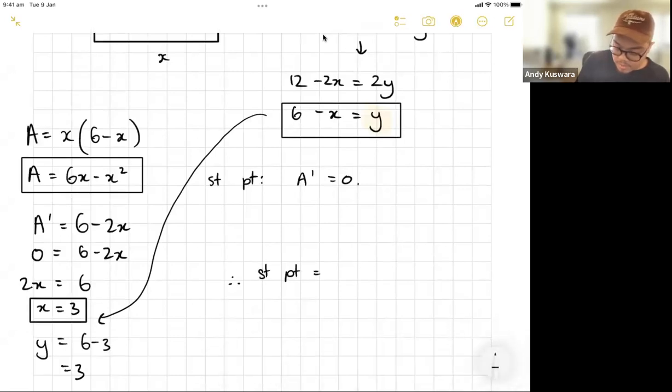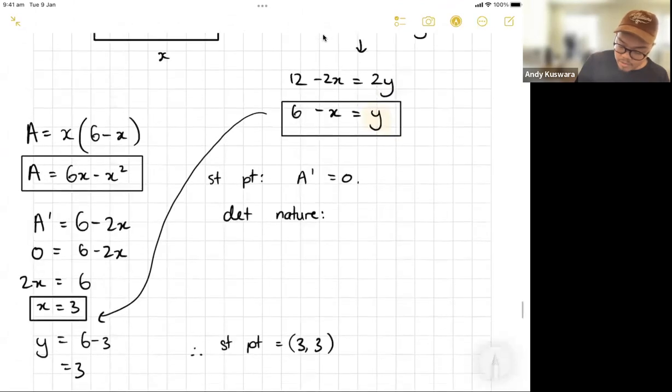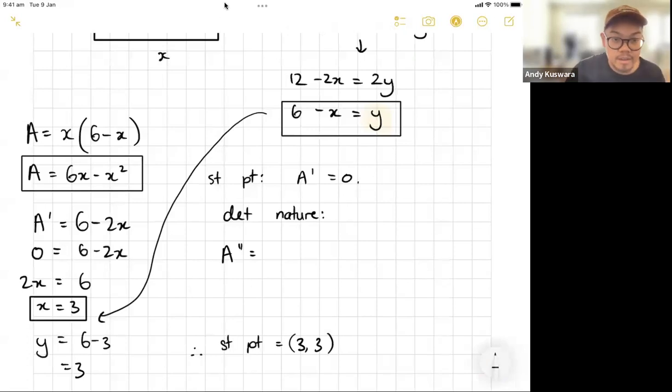Now the second part is I also need to determine nature. And how do we determine nature? Well the easiest way is to use your second derivative. So to use your second derivative let's do A double dash. Now I know that A dash is 6 take away 2x, so deriving it one more time A double dash just becomes minus 2.